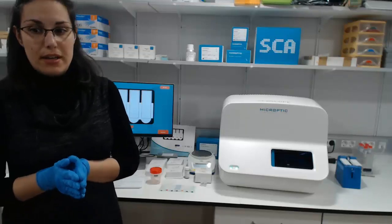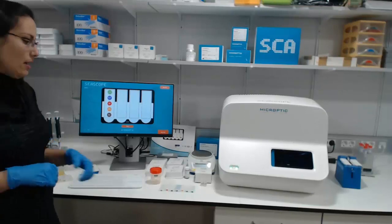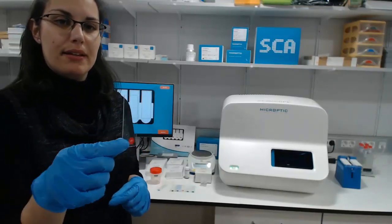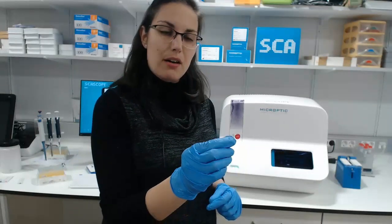For testing vitality, we will use a specific kit in which we will use a reagent similar to the eosin-nigrosin solution. We will incubate it to allow complete penetration of the eosin through the damaged cells. We will then put one drop of this mixture on a slide and immediately put a second slide on top of the first one, then separate both slides fully horizontally. This way we obtain two slides that can be used as replicates.